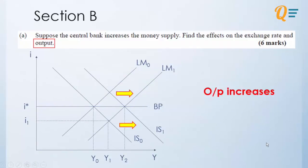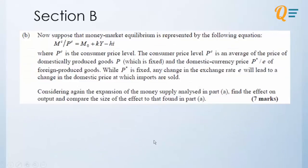So what is the ultimate effect on output? Output increases and our exchange rate depreciates. So now question 15b, we are given a money-market equilibrium equation.